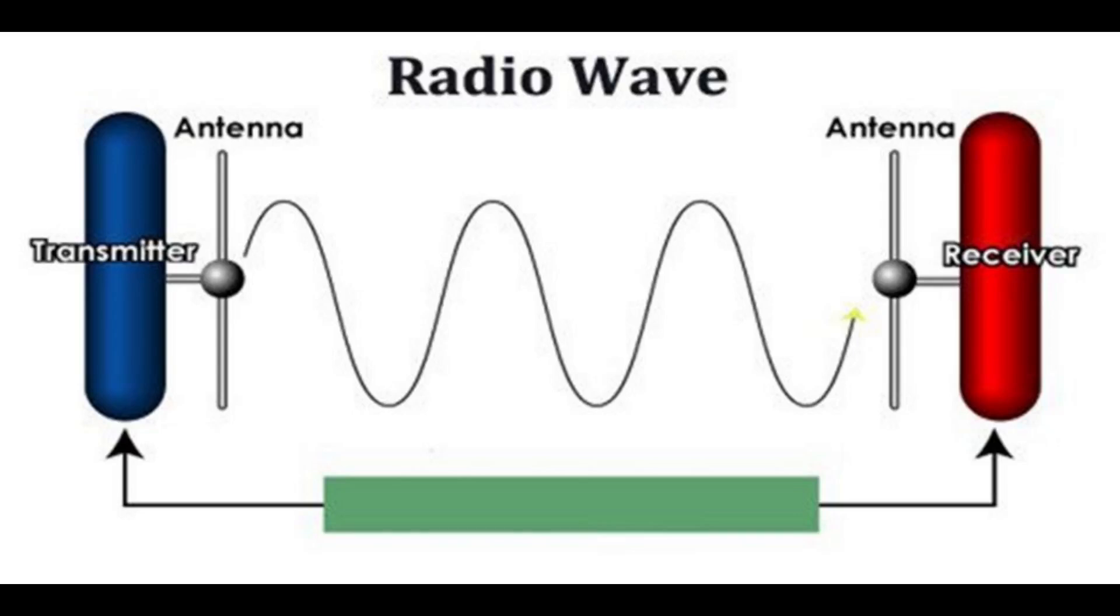Radio waves are a type of electromagnetic radiation. A radio wave has a much longer wavelength than visible light. Humans use radio waves extensively for communications.